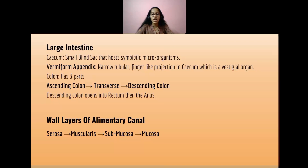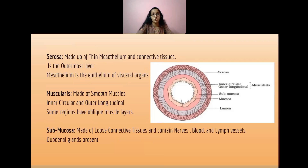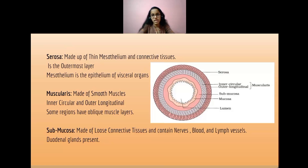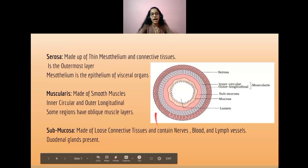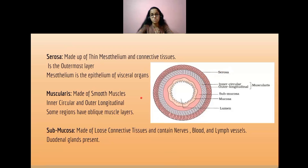The four wall layers of the alimentary canal are the serosa, muscularis, submucosa, and mucosa. The serosa is the outermost layer, made up of thin mesothelium and connective tissues. This mesothelium is called the epithelium of visceral organs.